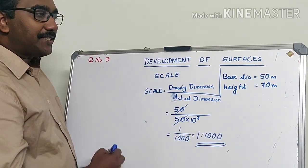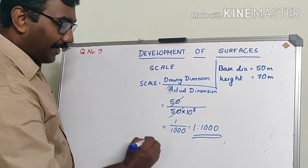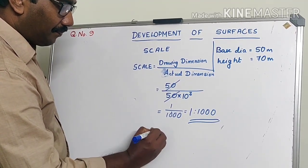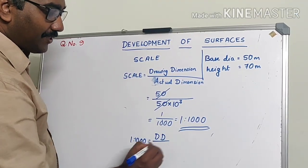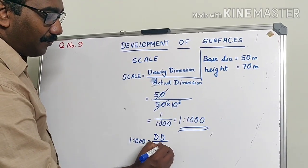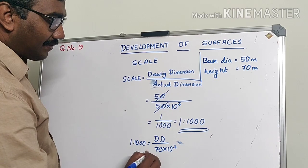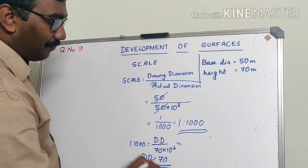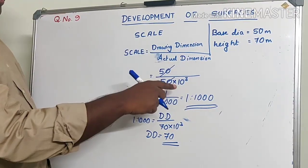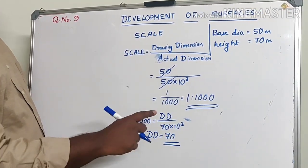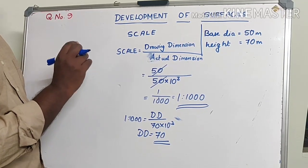Now, for the second dimension — the height. The actual dimension is 70 meters. Using the scale of 1:1000, the drawing dimension (DD) equals 1/1000 × 70 × 10³, which gives DD as 70 mm. So here you have found the scale for one dimension and used it to find the drawing dimensions of the remaining dimensions.